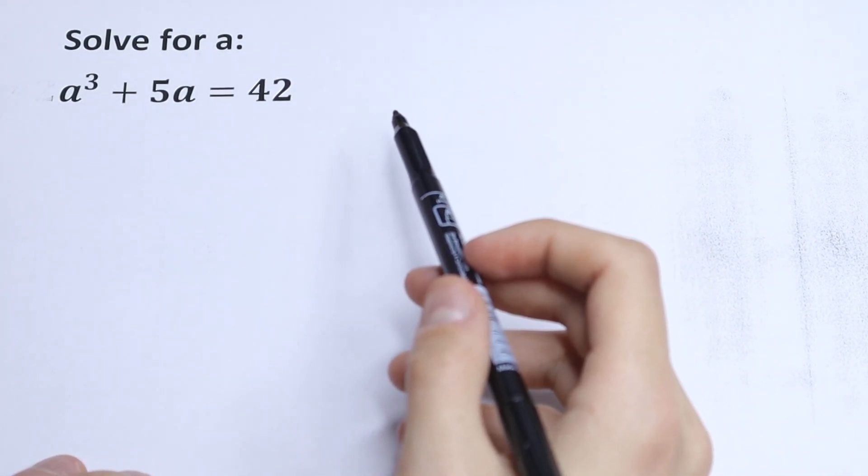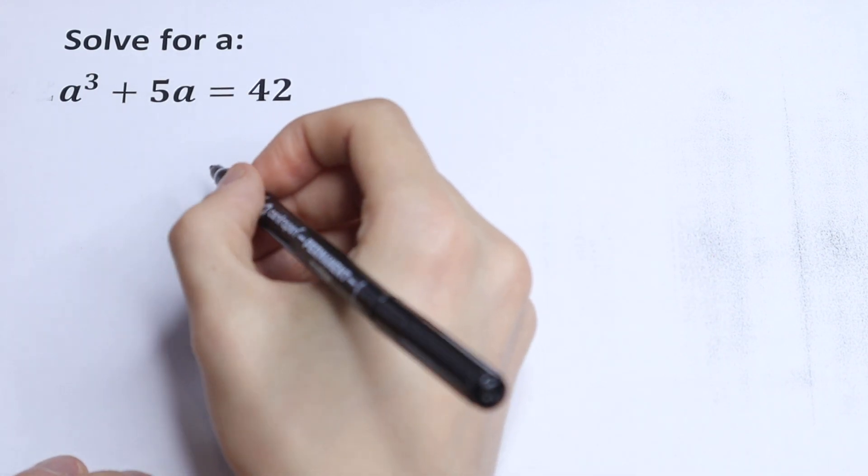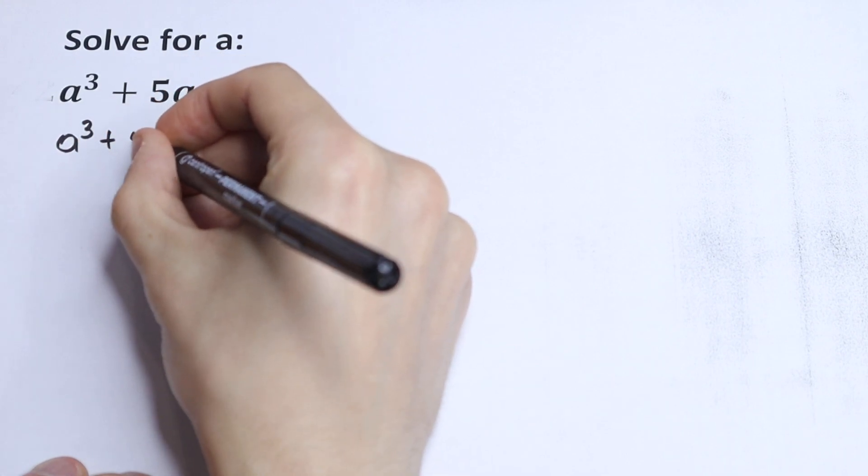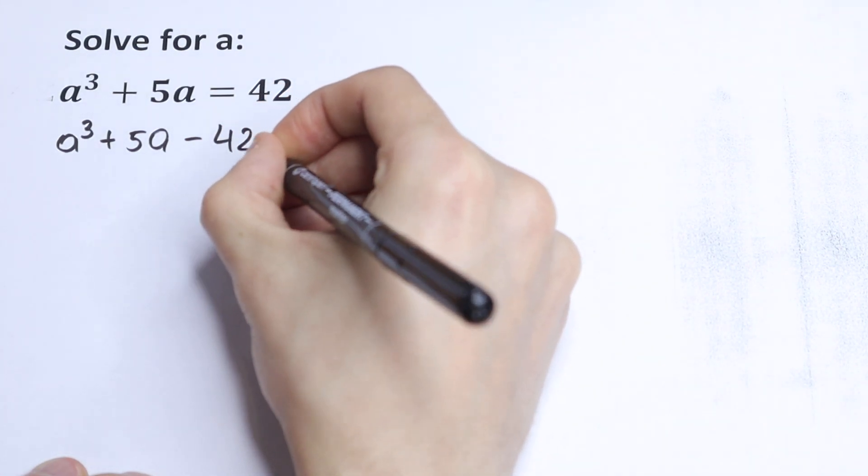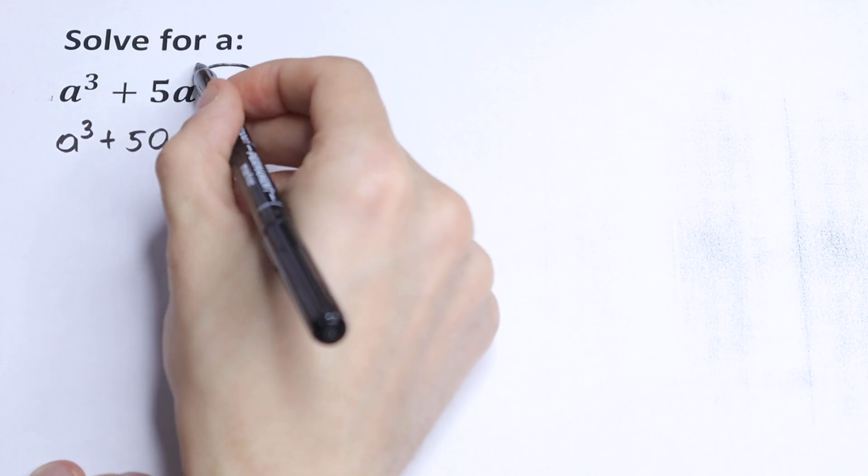How can you solve this? First, let's simplify this a little bit. Let's bring this 42 on the left, so as a result we will have a³ plus 5a minus 42 equal to 0. Just bring this 42 on the left.